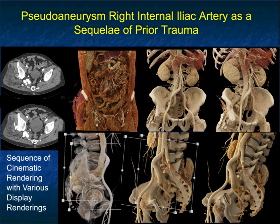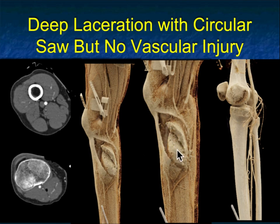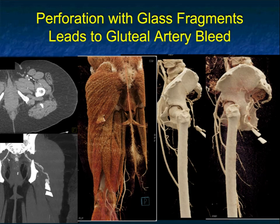If you're doing this on a computer, you can see everything in real time. Another example — you can see from the axials this patient has a laceration. The patient had trauma, but look at the detail of a laceration of the skin and the muscle, very nicely shown in the cinematic rendering. When I adjust the parameters, I can show you there's no vascular injury — the popliteal artery and trifurcation vessels are all very well seen.